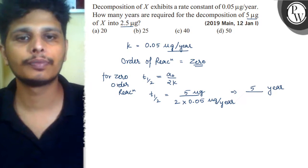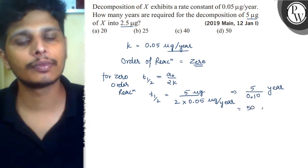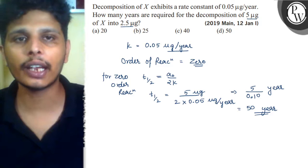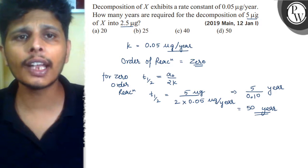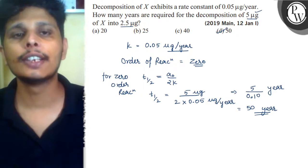5 upon 0.1 which means 50 years. So t half, the value of t half is 50 year. It means 50 years it will take to decompose 5 gram into 2.5. Hence the answer will be option D.